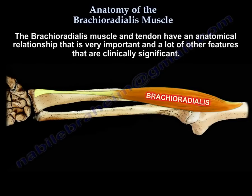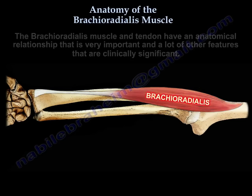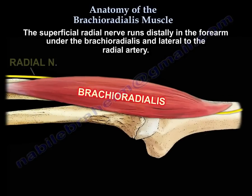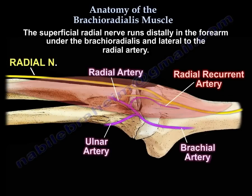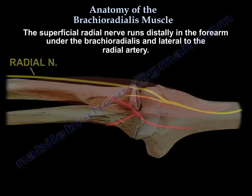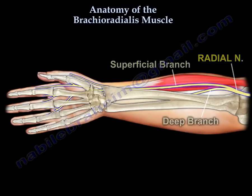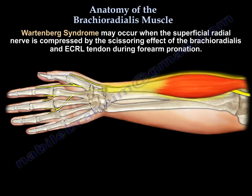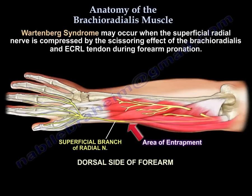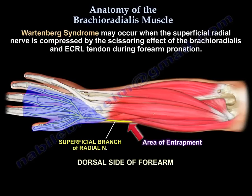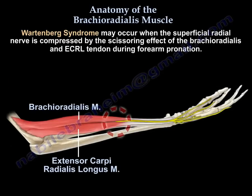The brachioradialis muscle and tendon have an anatomical relationship that is very important, with many features that are clinically significant. The superficial radial nerve runs distally in the forearm underneath the brachioradialis and lateral to the radial artery. You can get Wartenberg syndrome when the superficial radial nerve is compressed by the scissoring effect of the brachioradialis and extensor carpi radialis longus tendon during forearm pronation.